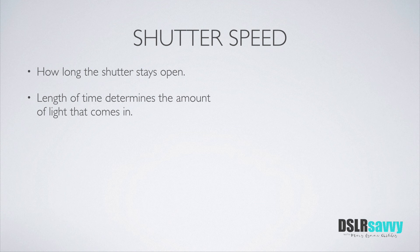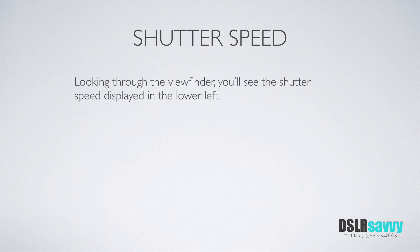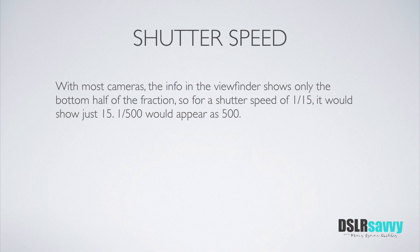With most cameras, when you look through the viewfinder, you'll see your current shutter speed at the bottom left, but it will not show the top part of the fraction. So if your shutter speed is 1/500th of a second, when you look through the viewfinder it'll show 500. You won't see the top part of the fraction. Typically, though, if you look at the display on the back of your camera, it does show the entire fraction — I think it just comes down to there being more real estate on the back of the camera to display that information.